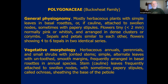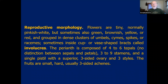The vegetative morphology of Polygonaceae includes herbaceous annuals, perennials, and sometimes small woody shrubs. The leaves can be simple, alternate, quite variable, frequently arranged in basal rosettes in annual species, and the leaves have papery stipules called ocreas. The flowers are tiny, pinkish-white, sometimes also green, brownish, or yellow, and grouped in dense clusters, cymes, spikes, or sometimes umbels. Sometimes flowers are inside a cup formed by bracts called involucres. The perianth is formed by four to six tepals, three to nine stamens, a single pistil, and a three-sided ovary with three styles. The fruits are small, usually three-sided achenes.